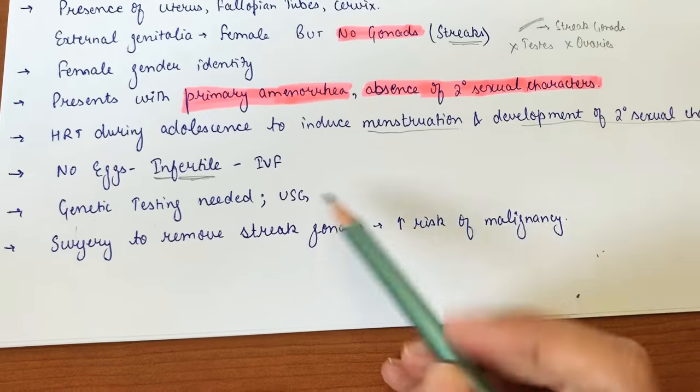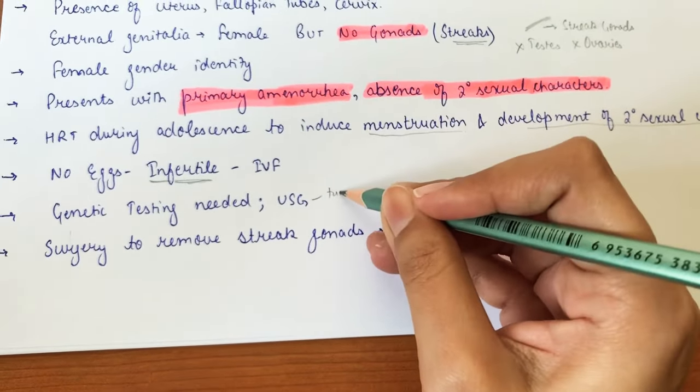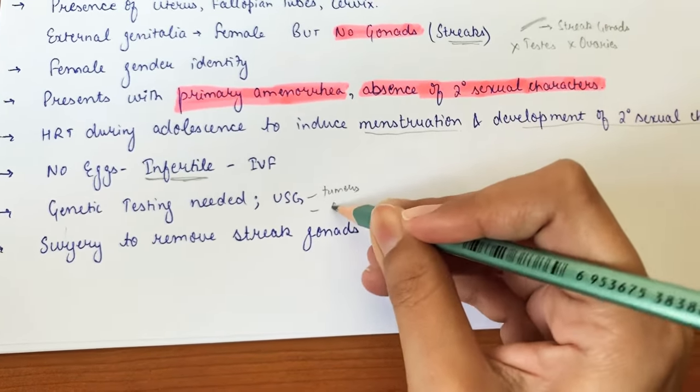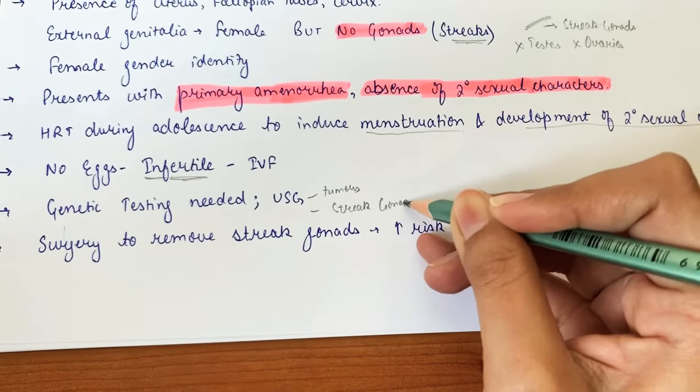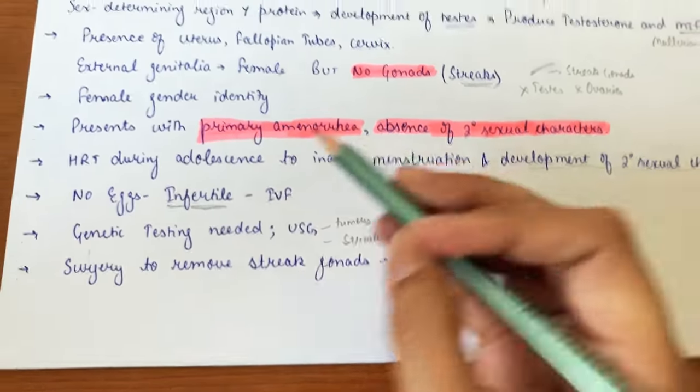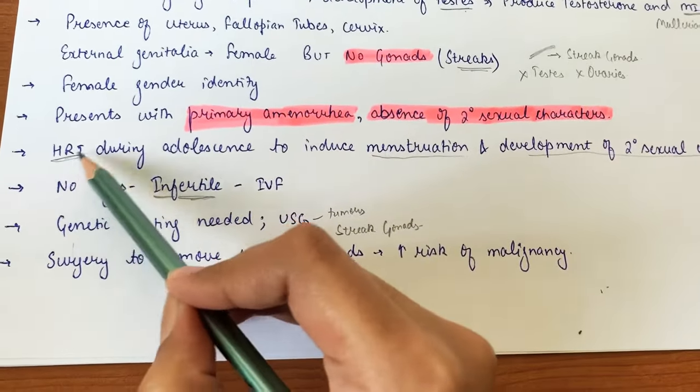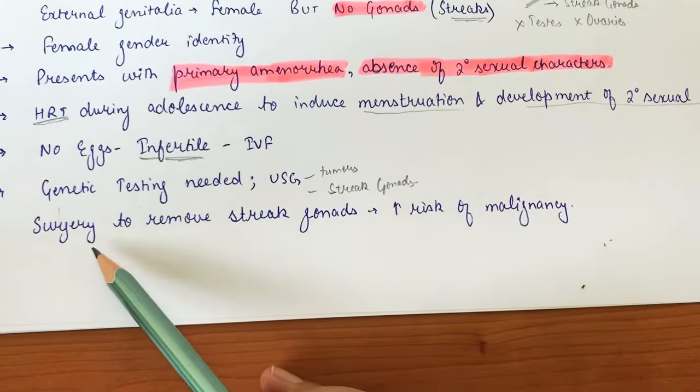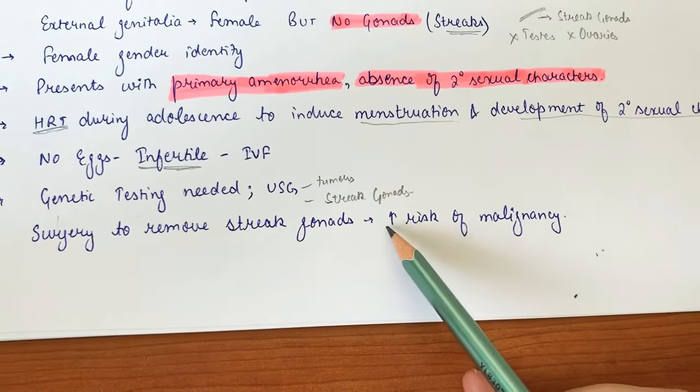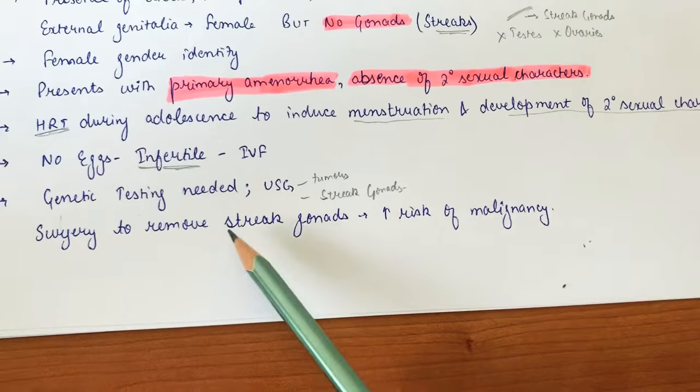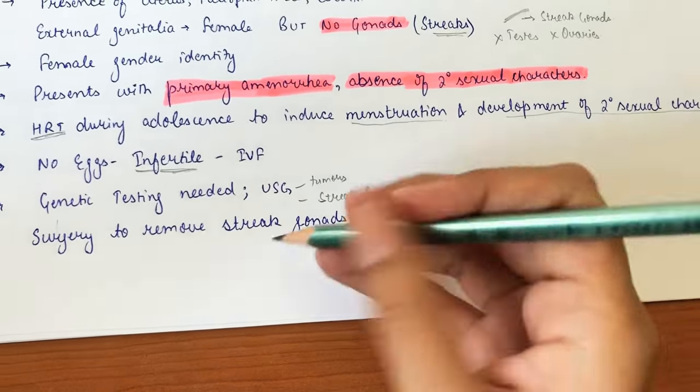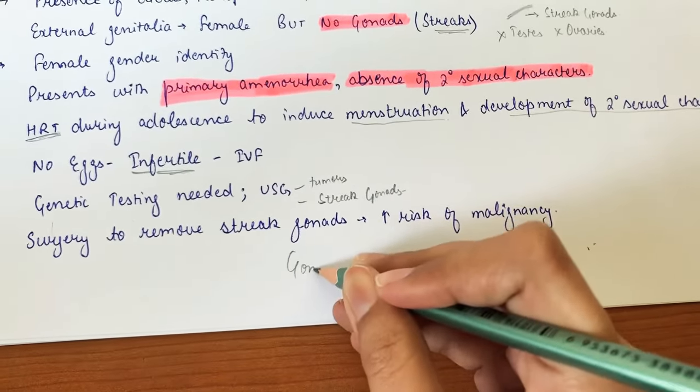Treatment includes hormonal therapy with cyclic progesterone and estrogen. Surgery is necessary to remove the streak gonads because they carry a high risk of malignancy. This surgery is called gonadectomy and is usually performed at puberty.